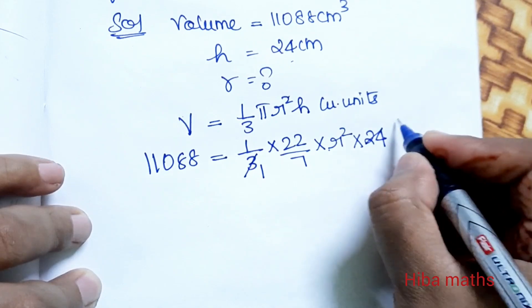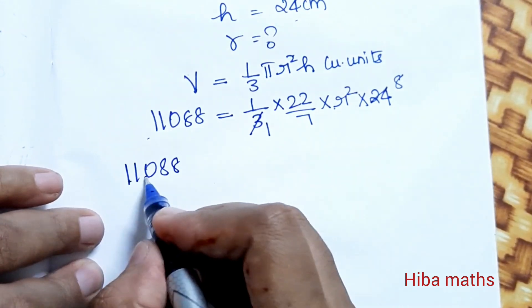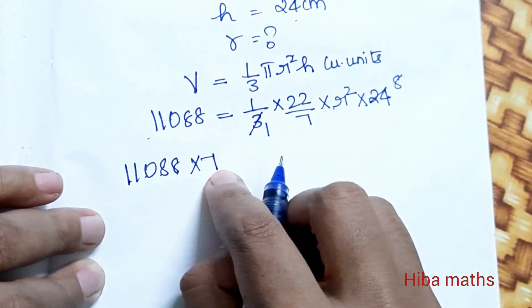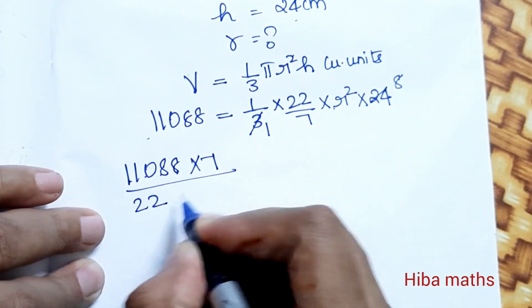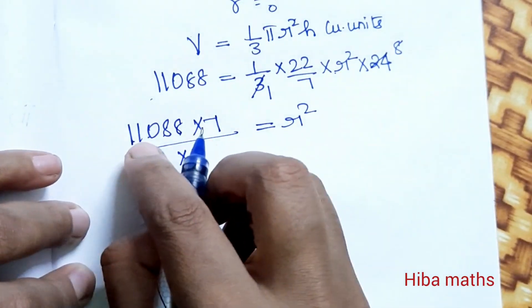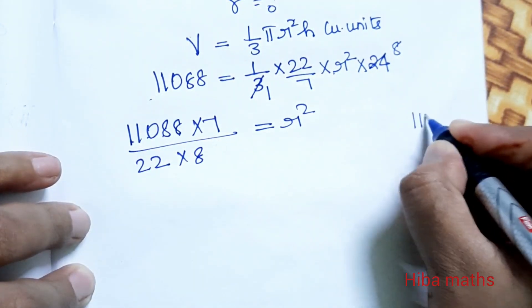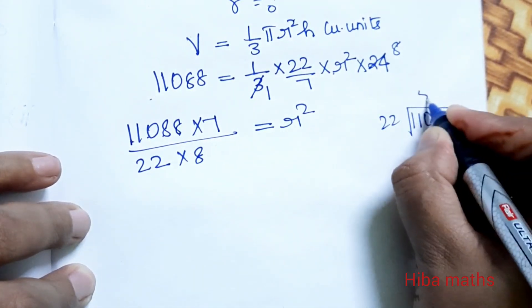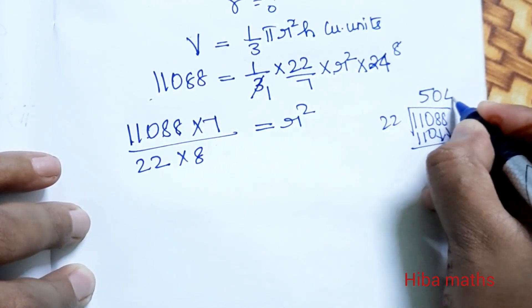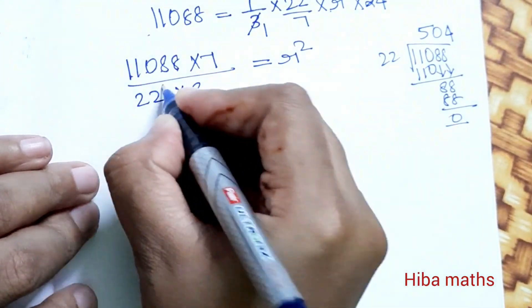Okay, now we simplify: 3 goes into 24 eight times. We can cancel it now.